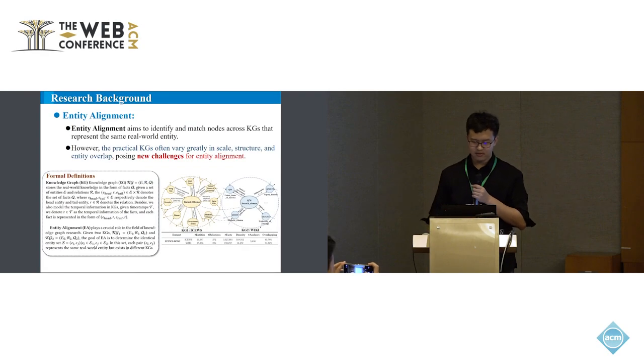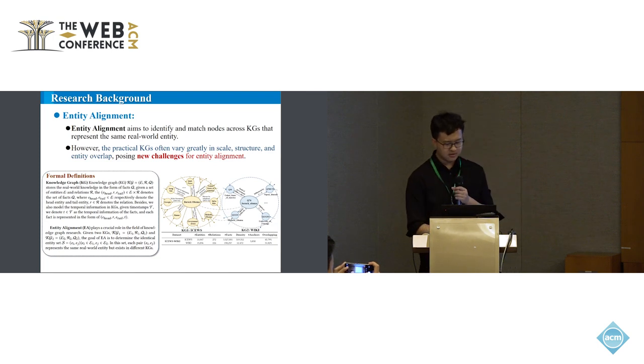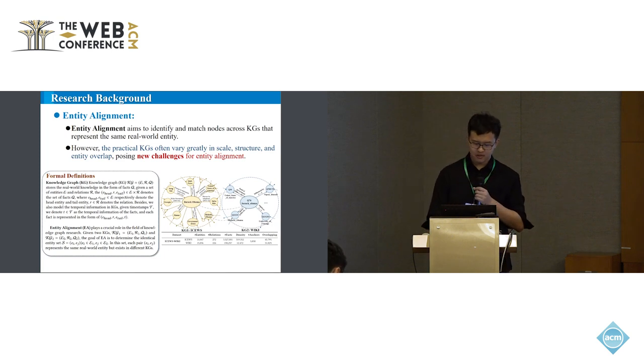The goal of entity alignment is to identify and match nodes across knowledge graphs that represent the same real world entity. However, the practical knowledge graphs often vary greatly in scale, structure, and entity overlapping, posing new challenges for entity alignment.